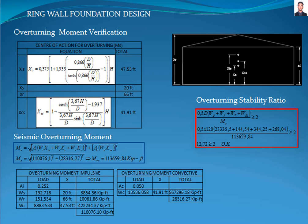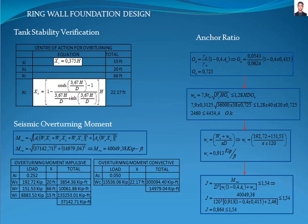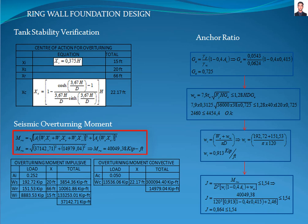As we can see, the verification passed. The next verification is the tank stability in accordance with section E6.2 of the American Petroleum Institute 650 standard. We calculate the overturning moment with respect to the ring wall. The overturning moment MRS is calculated with equation 6.1.5N-1, where XI is the height from the bottom tank shell to the center of action of the lateral seismic force related to the impulsive liquid force, calculated with equation E6.1.2.1N-1, and XC is calculated with equation E6.1.2.1N-3. The result is 40,049.38 kip-feet.